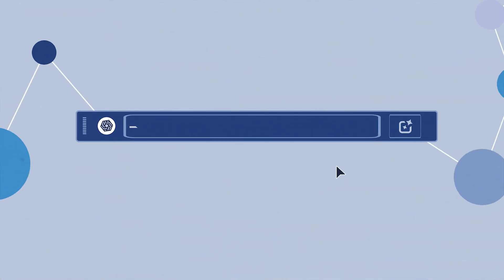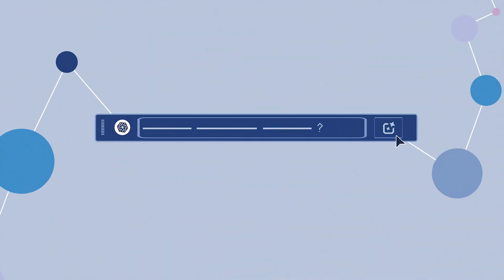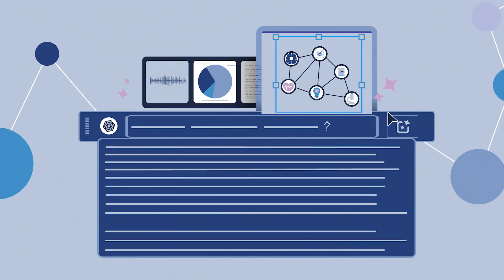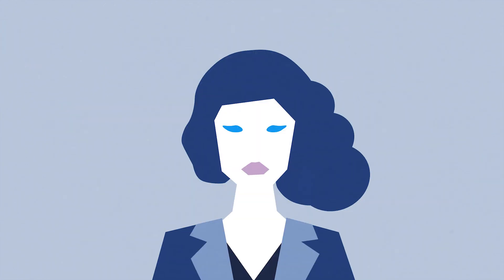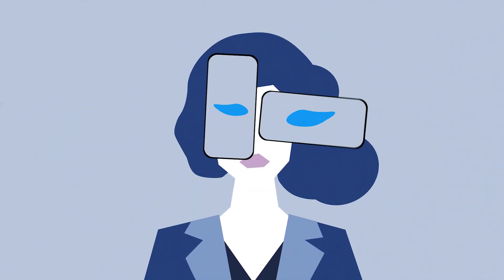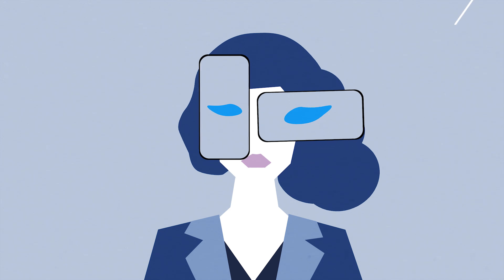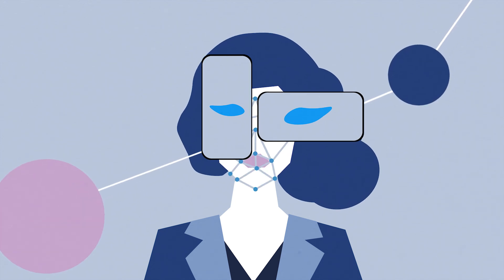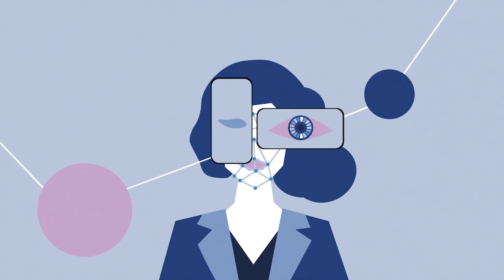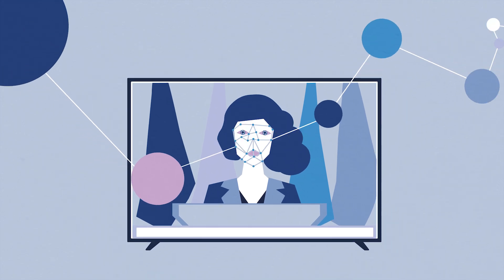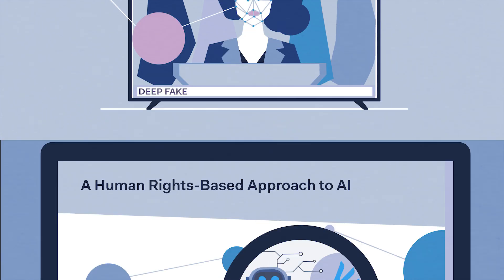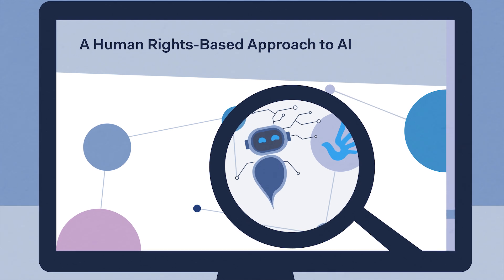Generative AI, like ChatGPT, creates immense potential for creativity and productivity. At the same time, it can blur the boundaries of what is real and what is fake, leading to doubt in the information sphere and the distrust of public institutions.